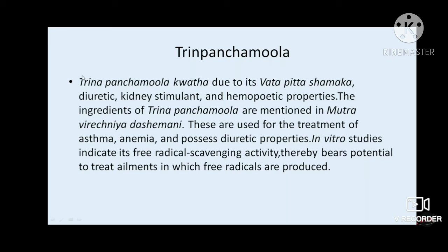Trinapanchamula kashaya or swaras is also used — it is vata-pitta shamaka, diuretic, kidney stimulant, and has hematopoietic property. In chronic kidney disease, since the kidney is a hematopoietic organ, anemia develops; Trinapanchamula helps relieve that anemia. Its ingredients are mentioned in the Mutravirodhini Dashamani in Ayurvedic classics. It is useful in treating anemia, asthma, and has diuretic property. In vitro studies indicate free radical scavenging activity, giving it antioxidant potential.